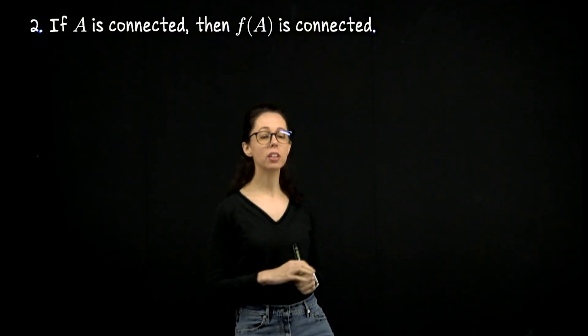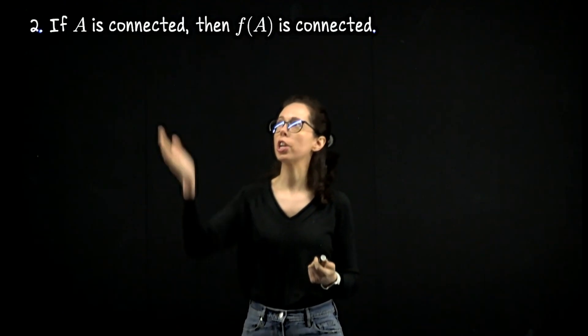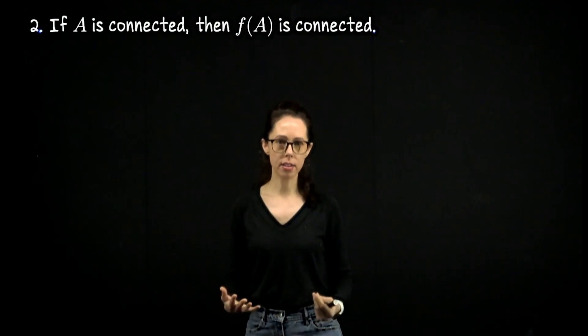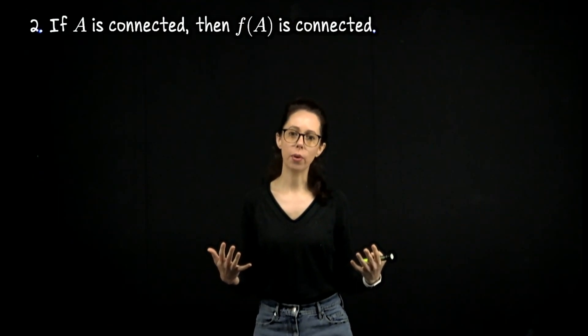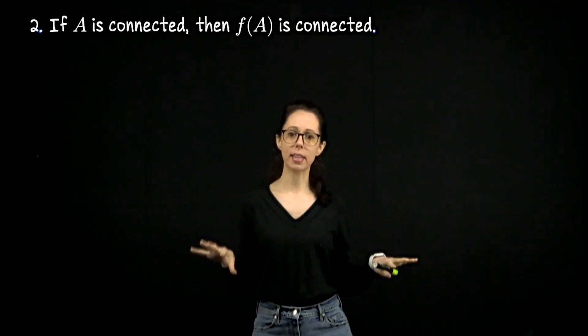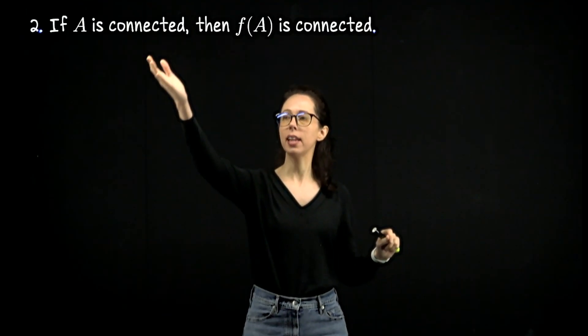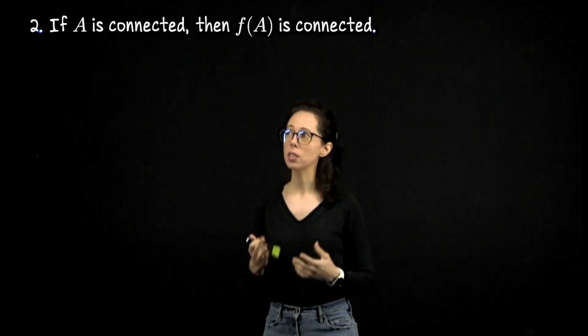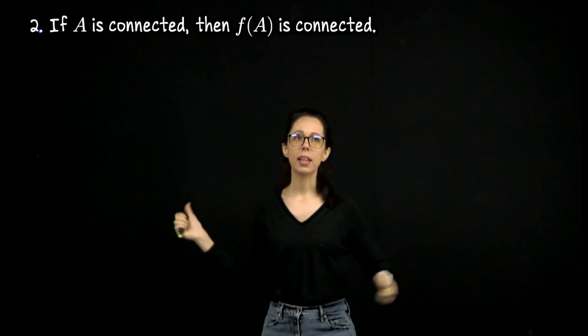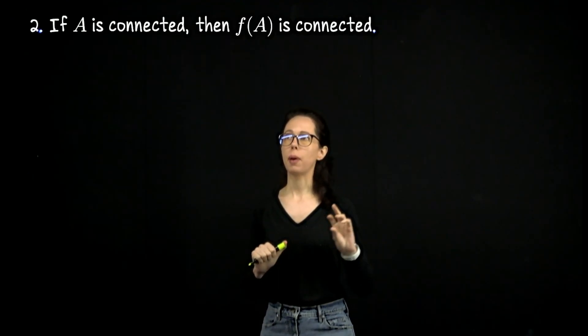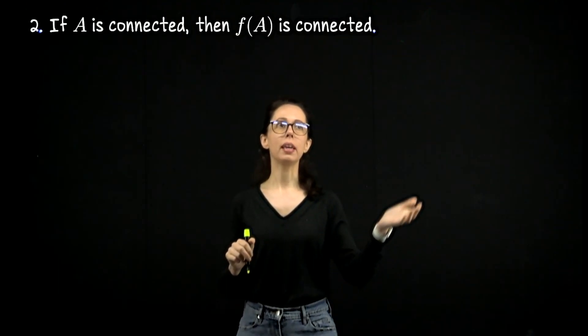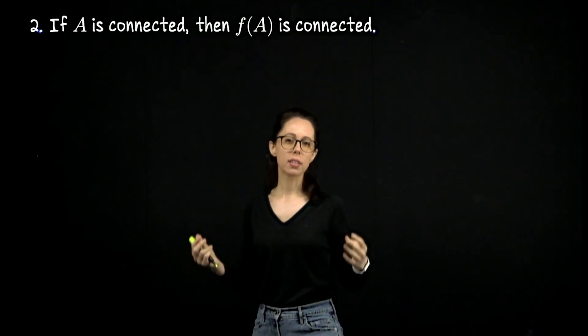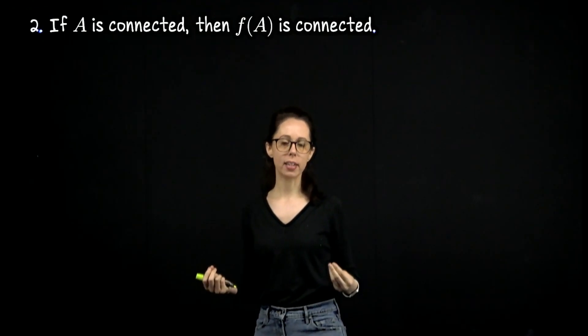I said this proof would go a little differently and here's why. When we define the notion of a connected set, we defined it by stating what it is not. So we gave like a full definition for the idea of being able to separate a set, and then we said that A is connected if it cannot be separated. So it's defined indirectly. So it shouldn't surprise you that this proof will be an indirect proof. Namely, we are going to prove it by proving the contrapositive. So the contrapositive would be if f of A is not connected, then A is not connected. Or in other words, if f of A can be separated, then A could be separated.